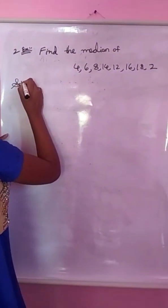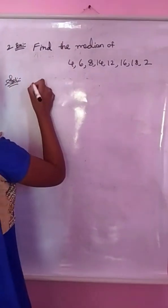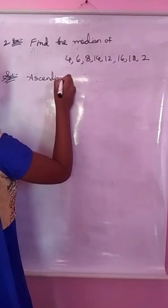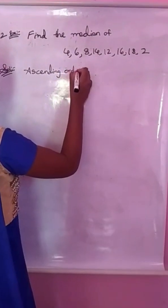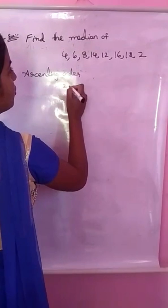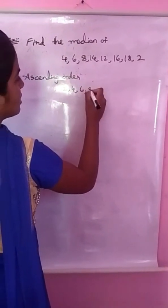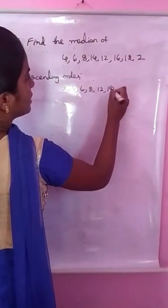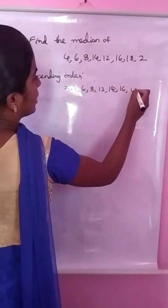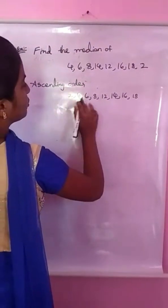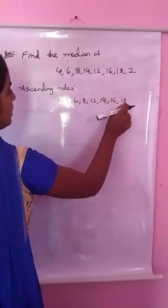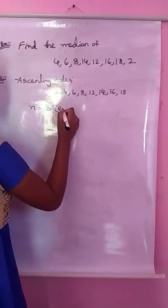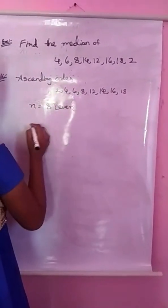Now you have to write in ascending order. Ascending order: 4, 6, 8, 12, 14, 16, 18. There is a total of 8 observations. N equals to 8. 8 is even. Now, even formula.